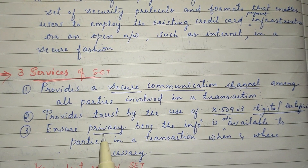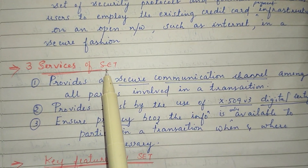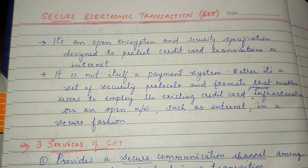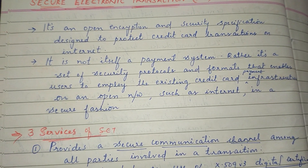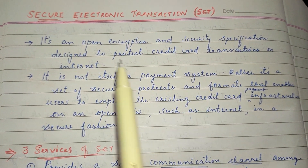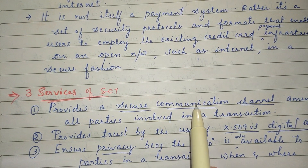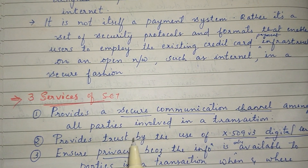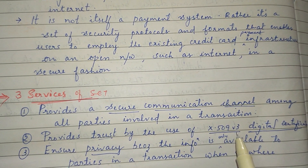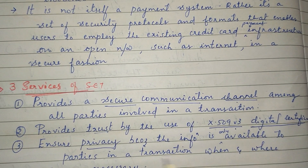So, the three services are: communication channel, digital certificate, and privacy. These are the three services of Secure Electronic Transaction, that is SET. The credit card transaction is protected. We have to develop an open encryption and security specification. Trust is established by the use of a digital certificate, X.509 version 3, and also privacy — we have to provide security.